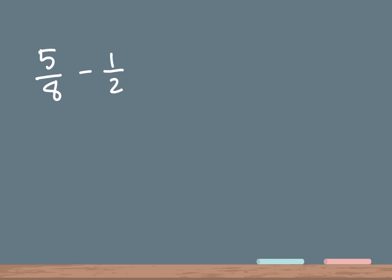Our first problem on the board is 5 over 8 minus 1 over 2. In a fraction, the top number is called a numerator and the bottom number is called a denominator. When you have a subtraction or an addition problem, you have to make sure you have a common denominator — the two bottom numbers have to be the same in order to subtract or add.